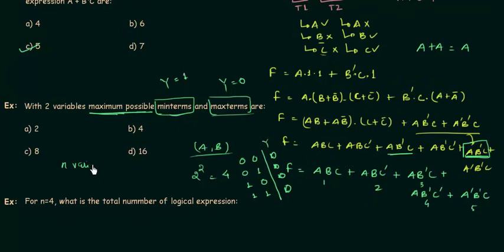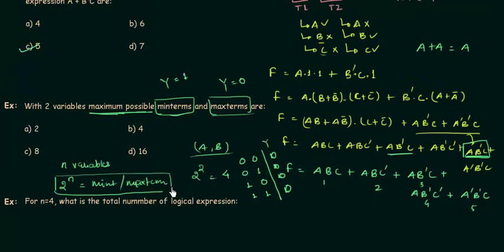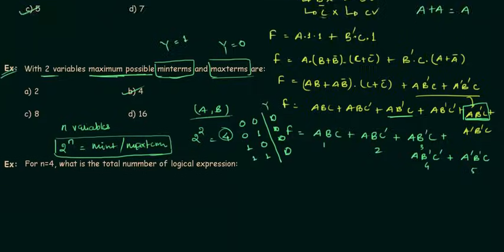We can generalize: if we have n variables, then we have 2 to the power n maximum possible min terms or max terms. For three variables we have eight possible min terms and eight max terms. For two variables the maximum is four min terms and four max terms, so option B is correct.